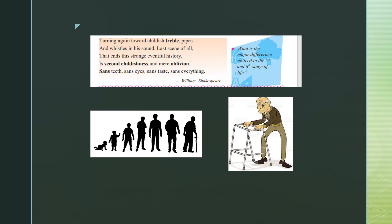The major difference between the fifth and the sixth stage is: in the fifth stage, the man is old but he knows his surroundings, he is wise and adviseful. Whereas in the sixth stage, the man has become old and is oblivious — unaware of anything going on around him — and becomes like a child who needs help at every stage of his life.